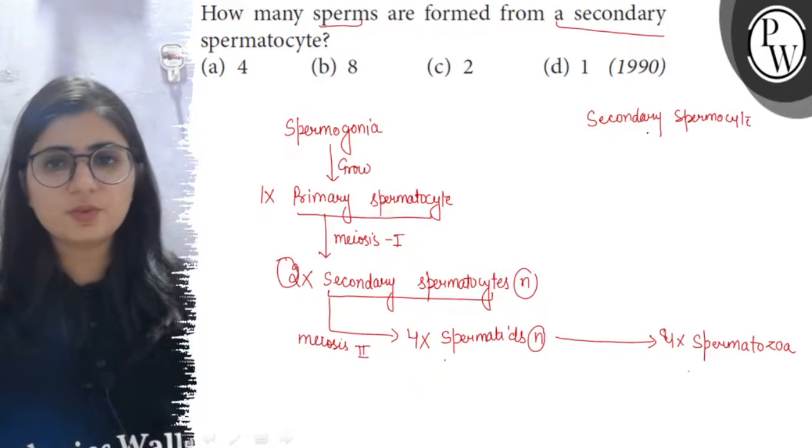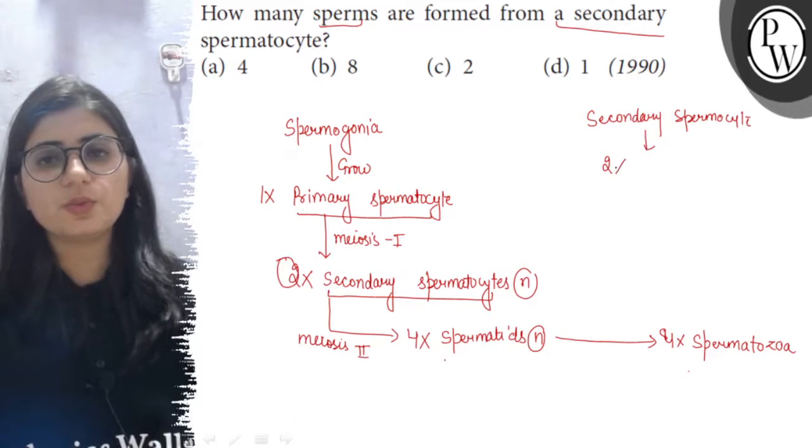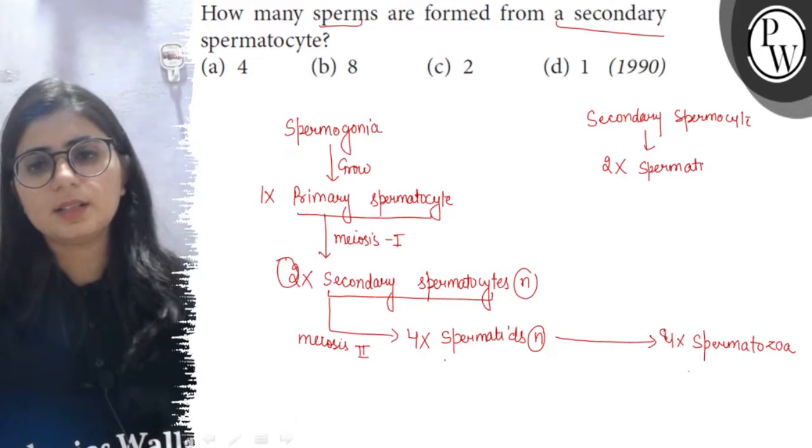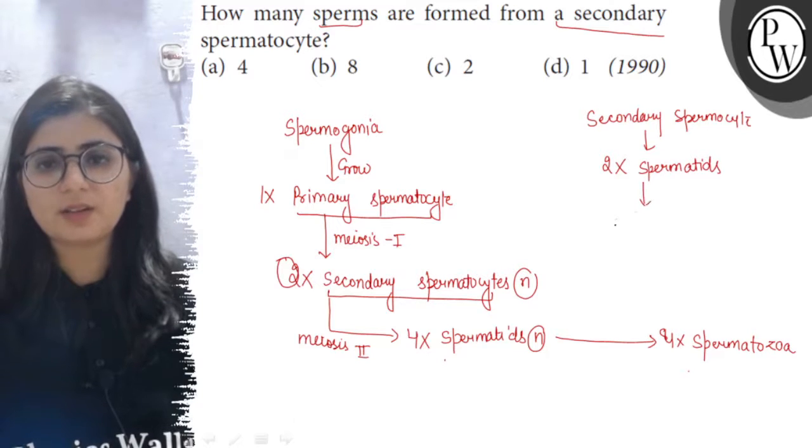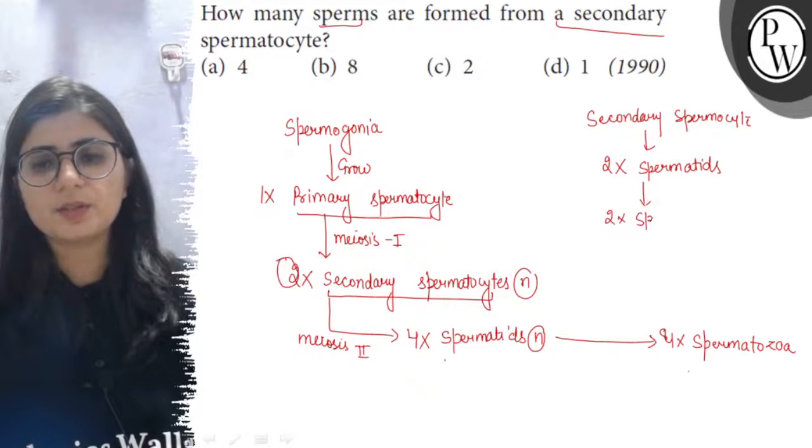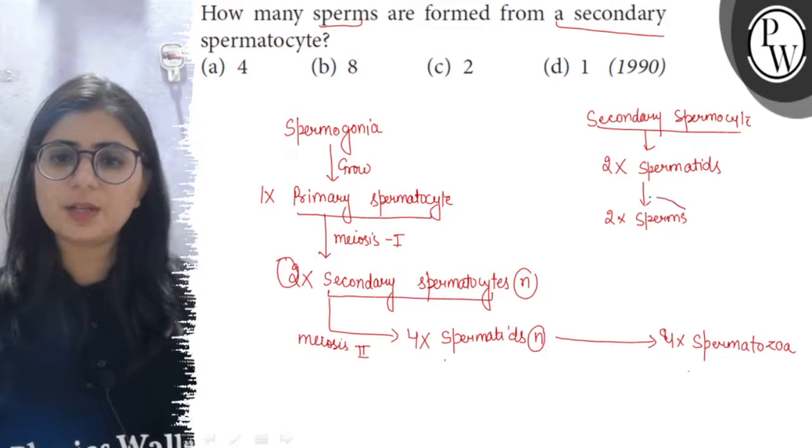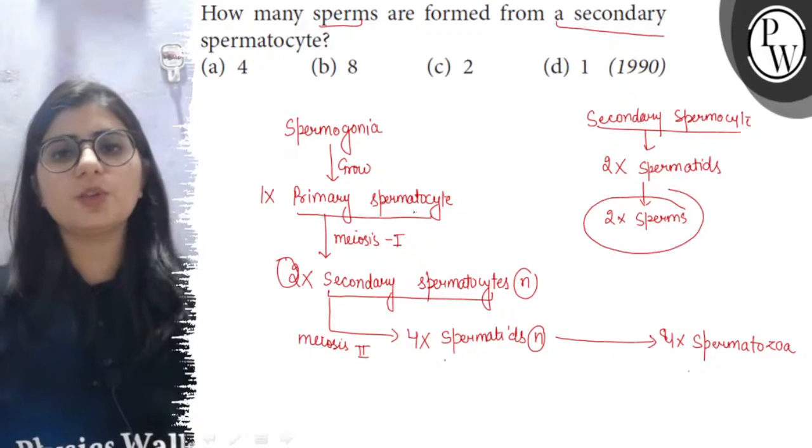undergoes meiosis 2, and from meiosis 2 two cells will be formed. These cells are called the spermatids, and these two spermatids will transform into two sperms or spermatozoa. So we can see that from one secondary spermatocyte there will be formation of two sperms.